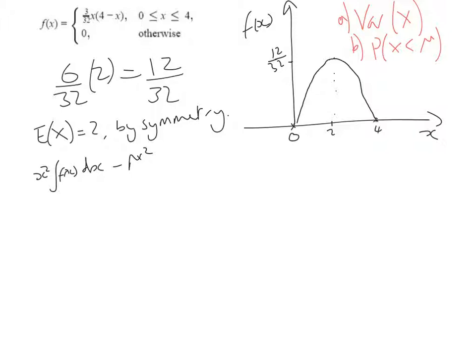So in this example, I'm going to take 3 over 32 out. And that's going to leave us with the integral between zero and four of four x cubed minus x to the power of four dx. So if I integrate this now, I've got 3 over 32 times four x to the power of four over four minus x to the power of five over five. That's between 0 and four and we're taking away two squared, which is four.